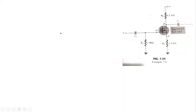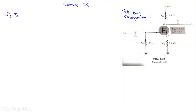Welcome everyone. We have another configuration — this time it is a self-biased configuration, which is example 7.8 in the book. We need to find IDQ and VGSQ, that is the Q-point, and secondly we need to find VD. These are our two unknowns in this configuration.